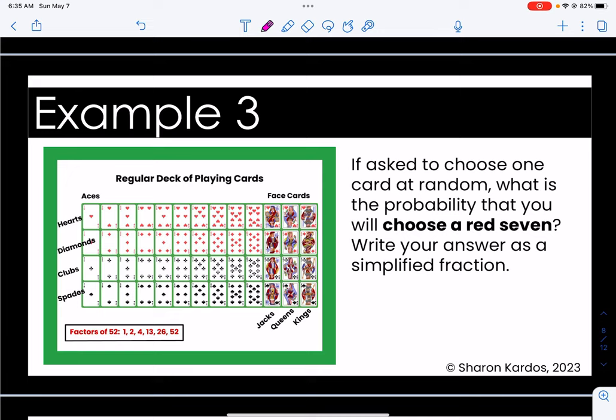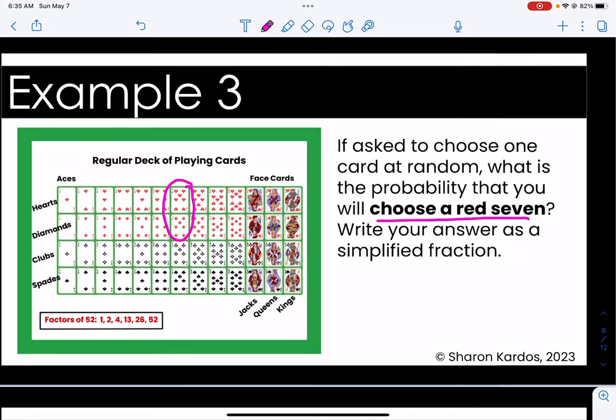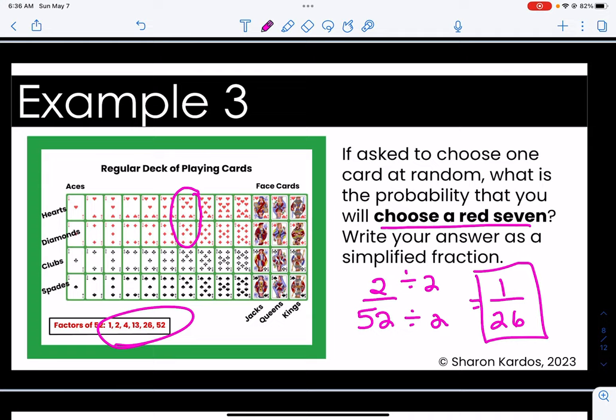Let's move on to example three. If asked to choose one card at random what is the probability that you will choose a red seven? Write your answer as a simplified fraction. Well if I zoom in I only have two red sevens. I have a heart and I have a diamond so two out of 52. Those are both even numbers so checking my factors I know I can divide them both by two which is going to give me one out of 26 which is my answer. So I have a one in 26 chance of choosing a red seven.